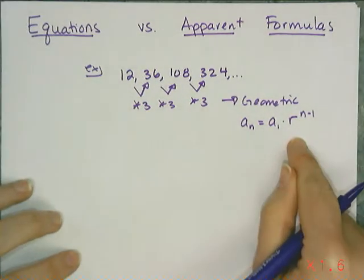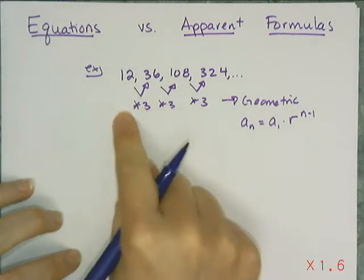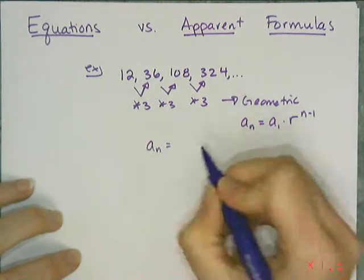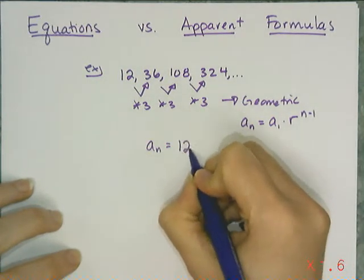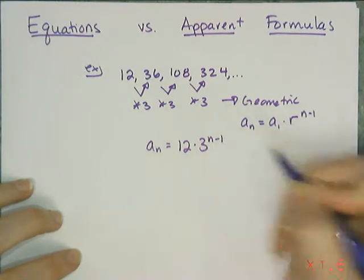So just plugging in what I know, I know the first term and I know the common ratio. So this sequence's apparent formula is 12 × 3^(n-1).